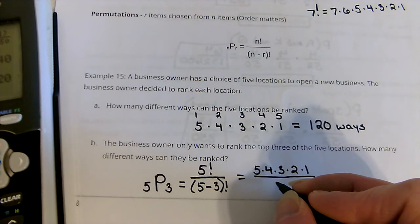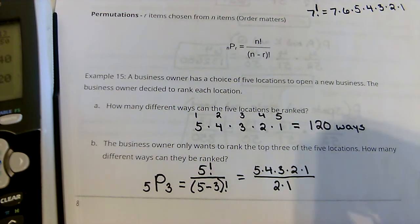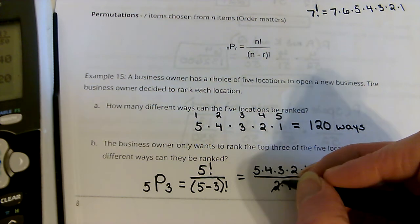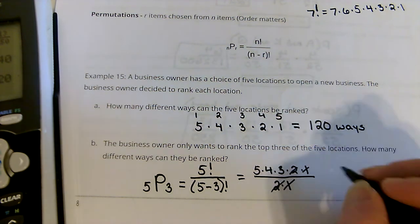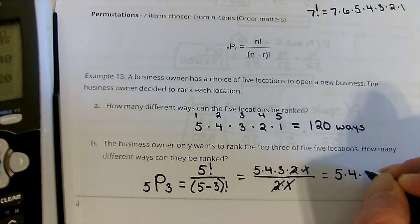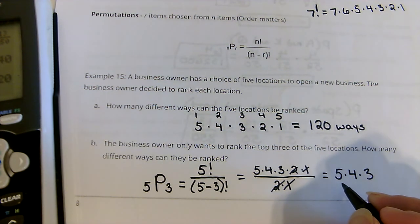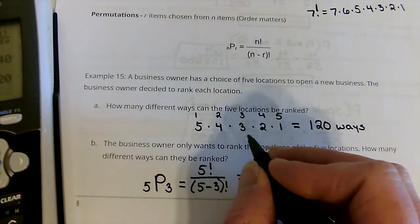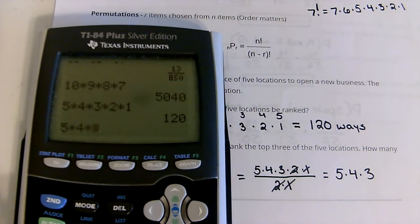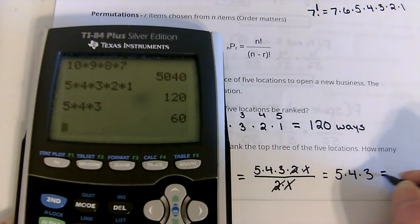Now, look at what would happen there. The 2's would cancel and the 1's would cancel. So, I'd only be looking at 5 times 4 times 3. Does that make sense? I'm just ranking the top 3. First place, second place, third place. So, we're only ranking the top 3. 5 times 4 times 3. That's 60 ways.